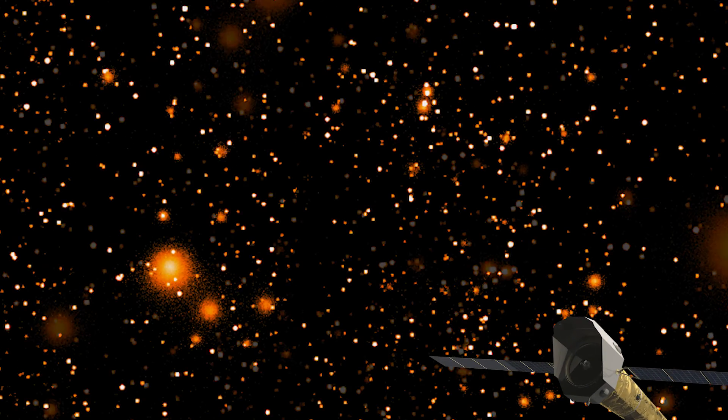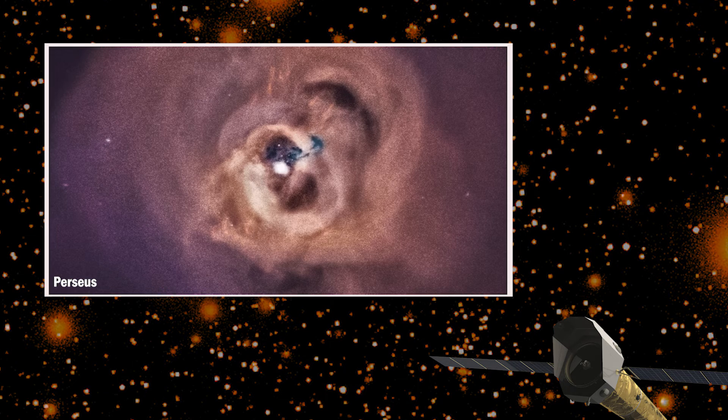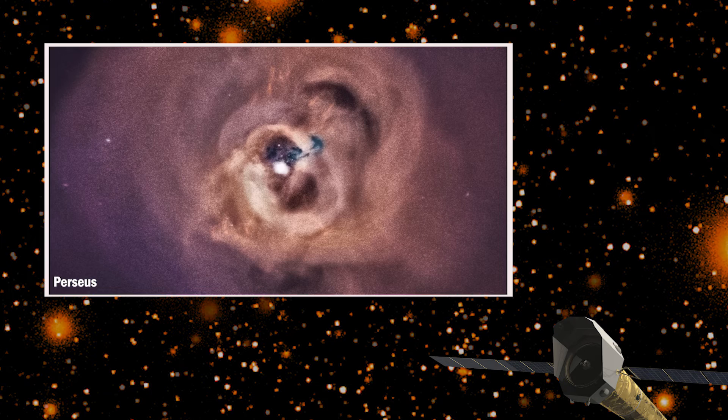The structures that Athena will observe on the gas tell us about how they are formed and about the influence of the central active nucleus present in some of them over their evolution.